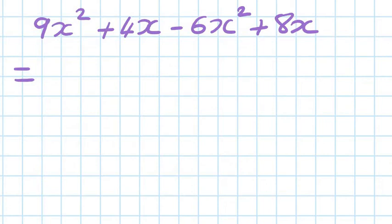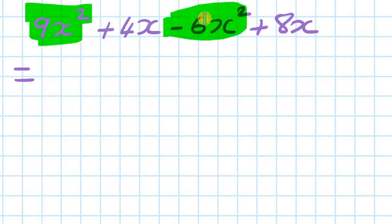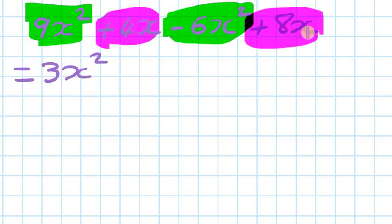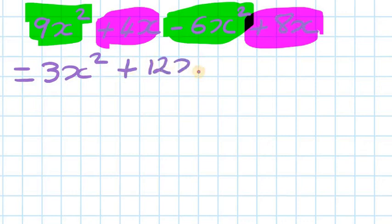Let's move on to four terms now. The question is to simplify these expressions — which means collect like terms. We just look for the like term first. The first like term is 9x squared and minus 6x squared. So 9 minus 6 is 3, so your answer is 3x squared. And you're left with 4x and 8x — they are like terms as well. So 4 plus 8 is 12, giving you 12x.